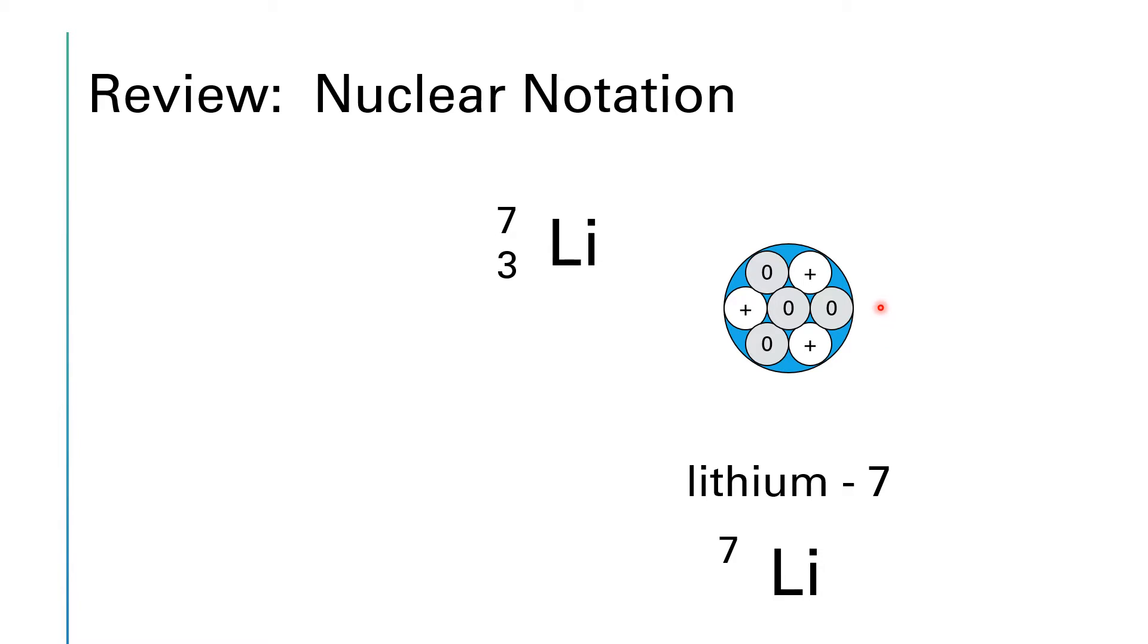The 7 is known as the mass number, and it is the total number of particles in the nucleus. So that's the sum of the protons plus the neutrons. So we have 1, 2, 3 protons and 1, 2, 3, 4 neutrons. So 3 plus 4 gives us 7. So that top number is known as the mass number. It's the total number of particles. That bottom number is the atomic number. It's only the number of protons. The nuclear charge is also another way of thinking about the atomic number since it's the number of protons.